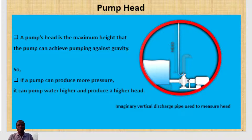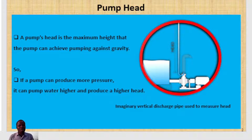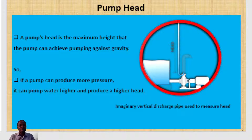Imagine you have a centrifugal pump taking suction from a supply tank — or suction tank — and delivering it through a discharge pipe into a discharge tank up there. Now imagine that you move the discharge line of the pump so that it pumps straight up into the air. With the pump in operation, as long as the pump is running, it will move the liquid to some height measured in meters.